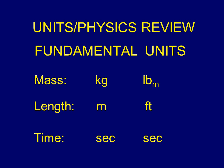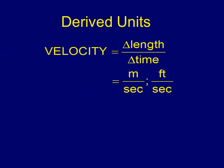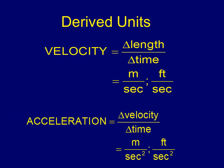Fundamental units can be manipulated to form derived units. A derived unit would be something like velocity — the change in length over the change in time — so you'd have meters per second or feet per second. Another is acceleration: if I take velocity and divide it by time, the change in velocity with respect to time is acceleration, and we could have meters per second squared or feet per second squared.